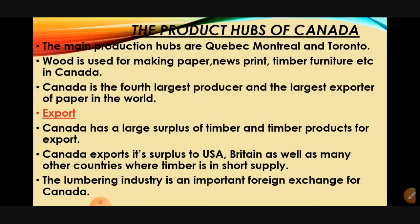The product hub of Canada: the main production hubs are Quebec, Montreal, and Toronto. Wood is used for making paper, newsprint, timber furniture, etc. Canada is the fourth largest producer and the largest exporter of paper in the world. Canada has a large supply of timber and timber products for export. It exports its surplus to the USA, Britain, and many other countries where timber is in short supply. The lumbering industry is an important source of foreign exchange for Canada.